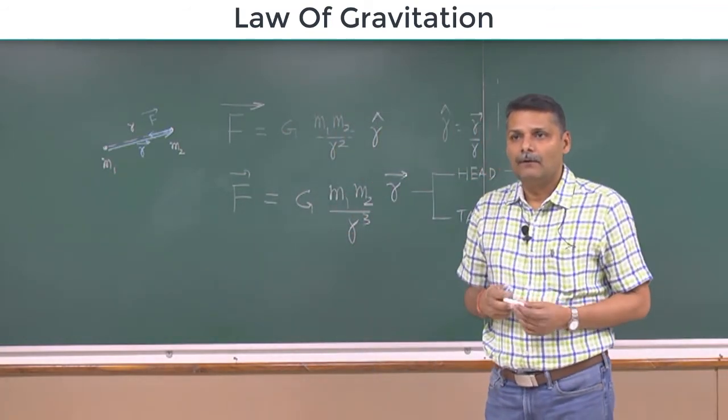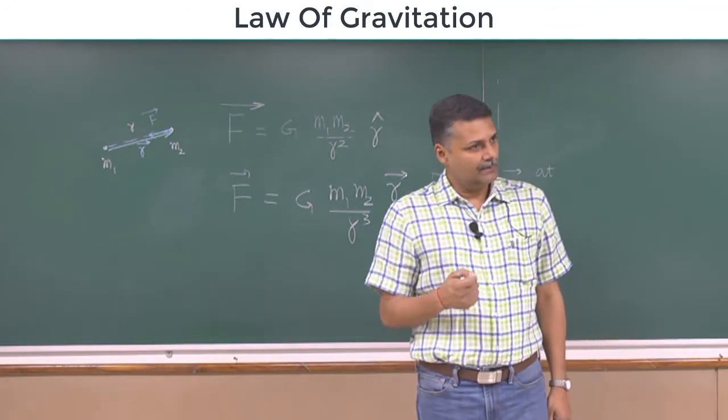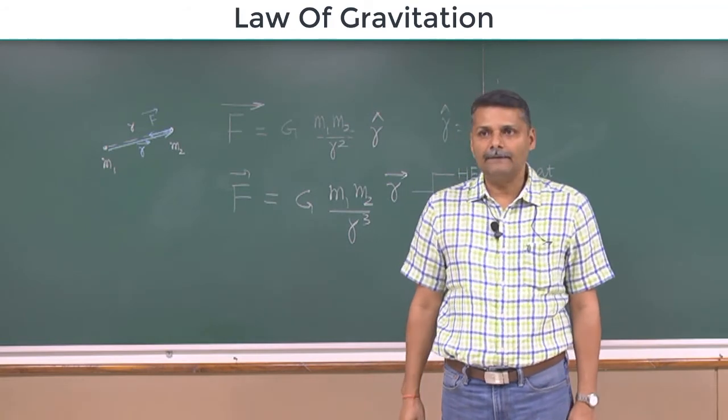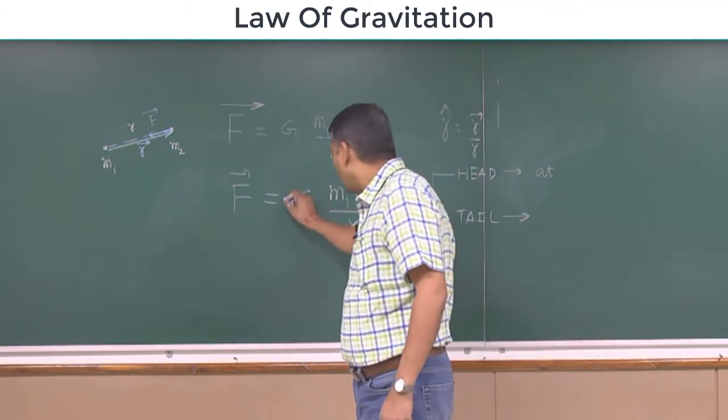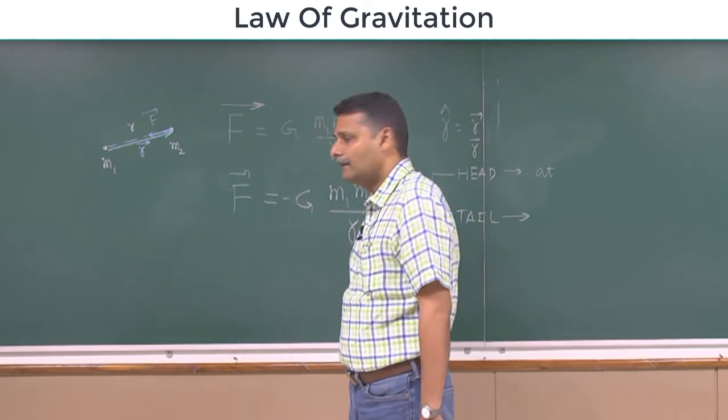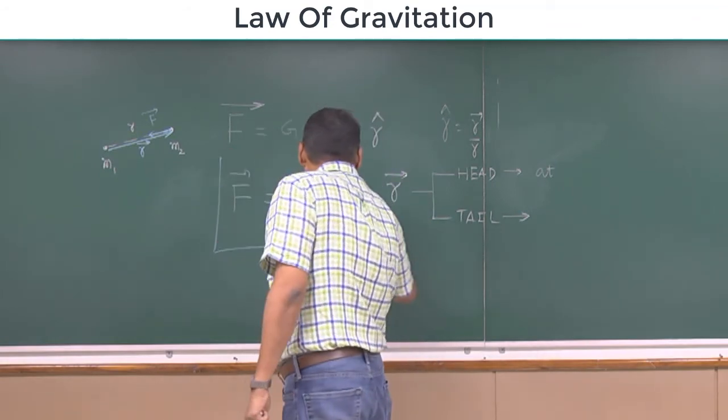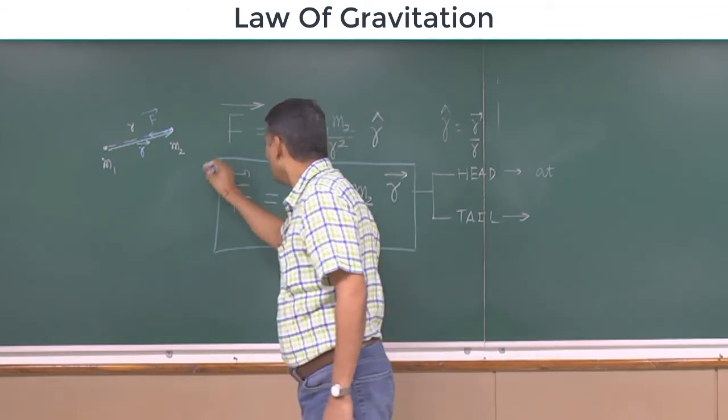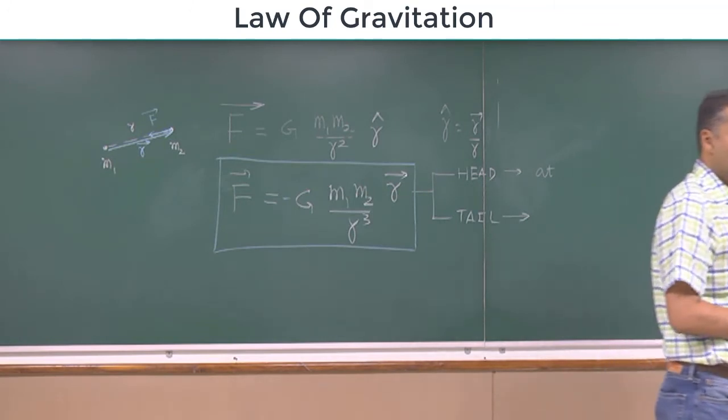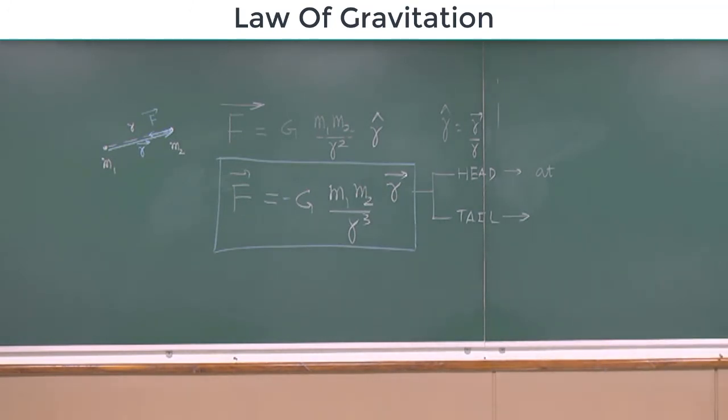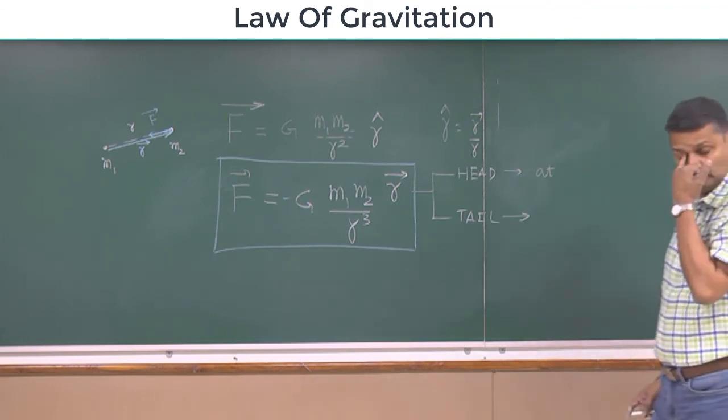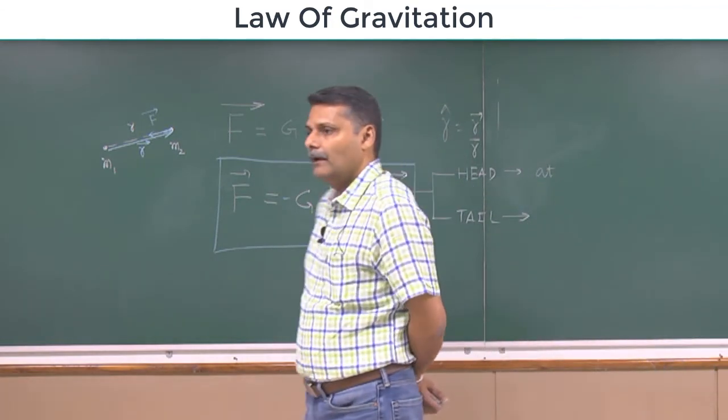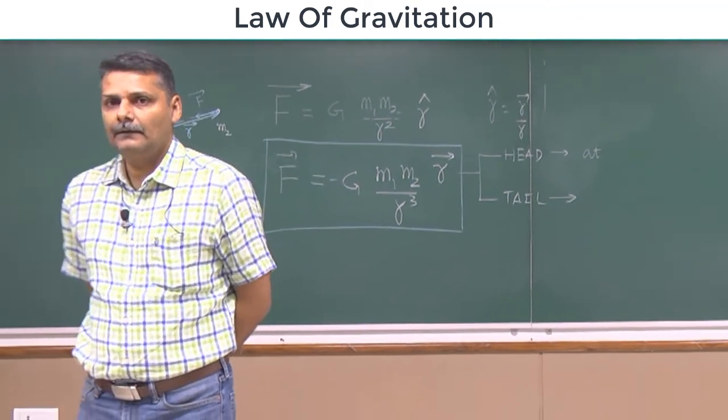And this r is not in the same direction, which direction? In the opposite direction. There is a sign in the vector notation. What is the sign? What should be the sign? Minus. What is the expression? The law of gravitation using vector notation.